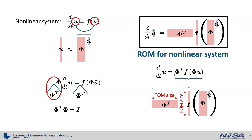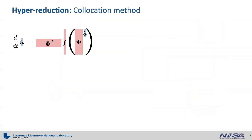Sometimes this form of reduced order model is slower than the corresponding full order model, defeating the original motivation of reduced order models, which is accelerating the full order model simulation. Therefore, it is crucial to get rid of the full order model scale from this reduced order model form. The method of removing full order model dependency is called hyperreduction.